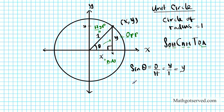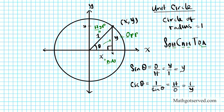The next one is cosecant. Cosecant theta is the reciprocal of sine, so cosecant equals 1 over sine. Reciprocating the fraction gives us hypotenuse over opposite, which is 1 over y. So cosecant theta equals 1 over y.